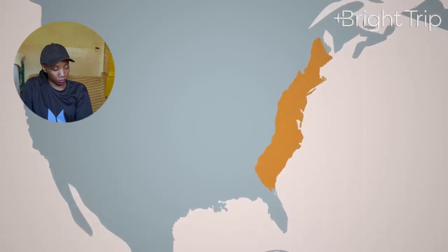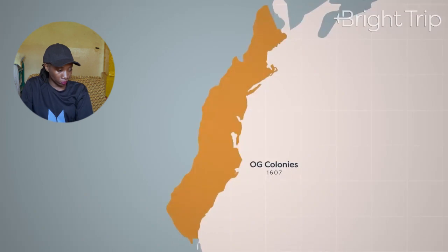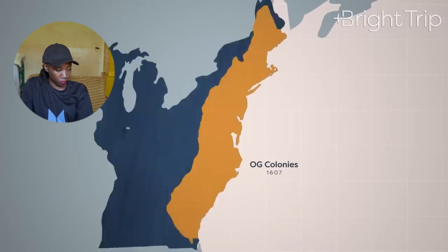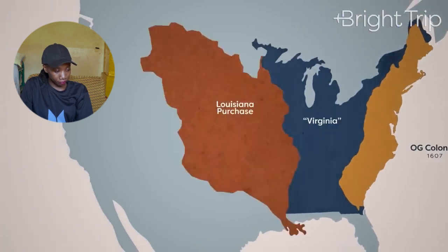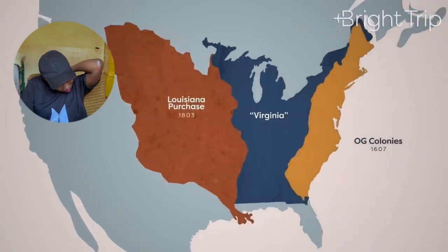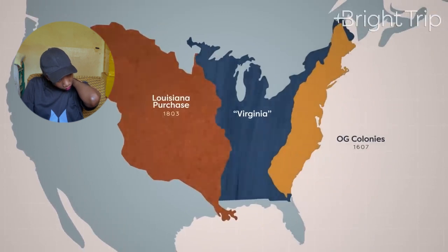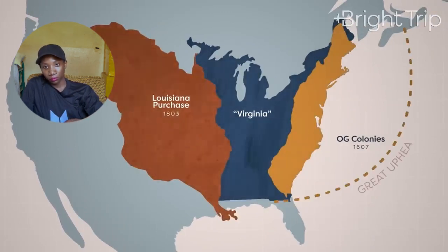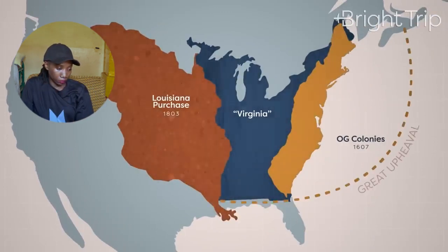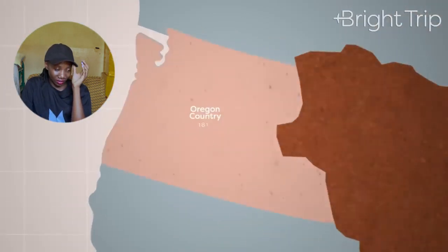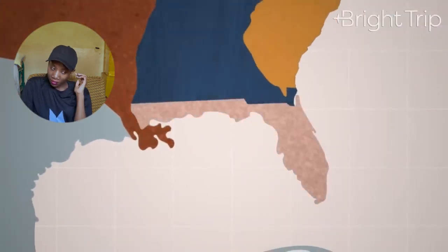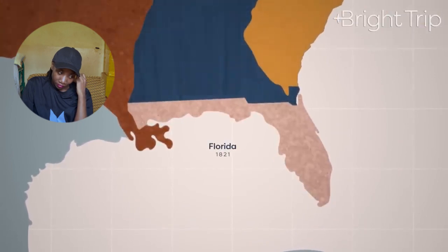Every section of the United States has a unique story of how it became part of the country. The USA started as 13 British colonies east of the Mississippi. In 1803 we obtained the Louisiana Purchase from France, which doubled the size of the country. In 1819 we expanded to the Pacific for the first time and had a shared arrangement with the British in Oregon Territory, and two years later Florida was ceded to us from Spain.